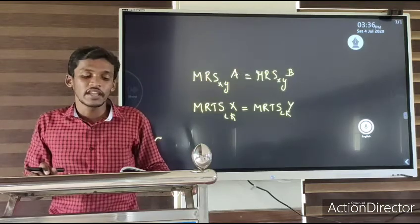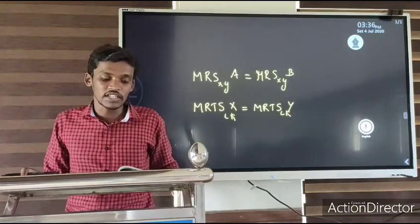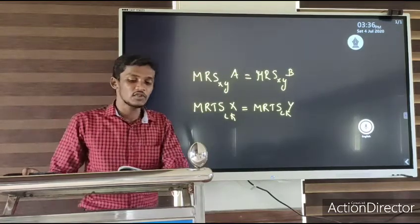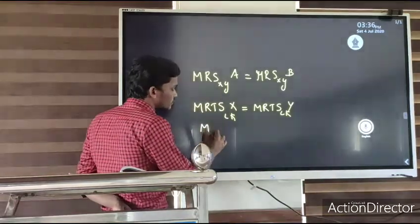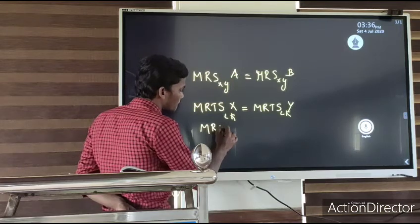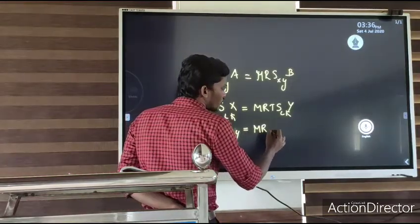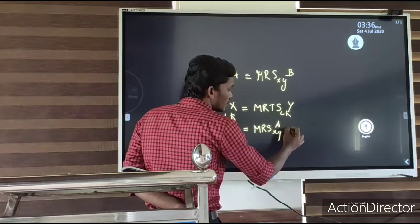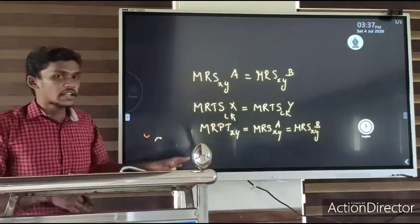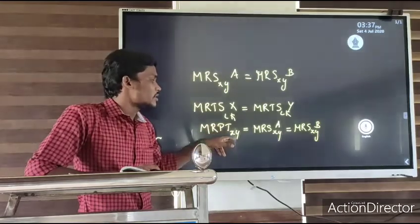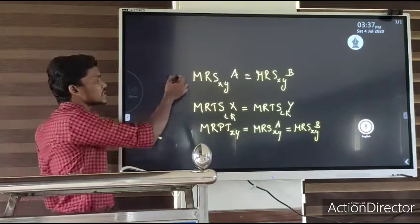The third condition is efficiency in the output mix. The condition for efficiency in the output mix requires that the marginal rate of product transformation (MRPT) between any two commodities must be equal to the marginal rate of substitution between the same two goods. MRPT of X for Y must be equal to the marginal rate of substitution of X for Y of Consumer A, which must also equal the marginal rate of substitution of X for Y of Consumer B.